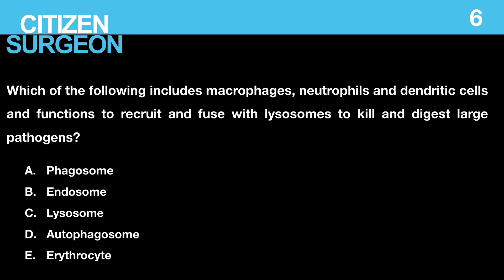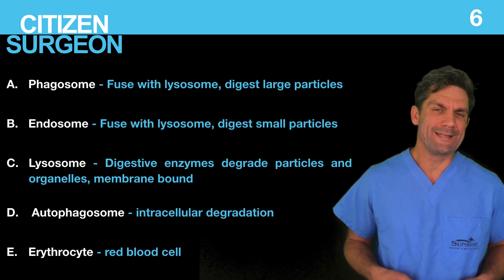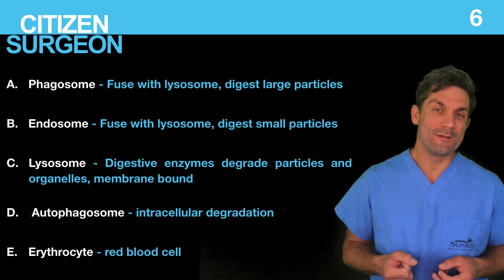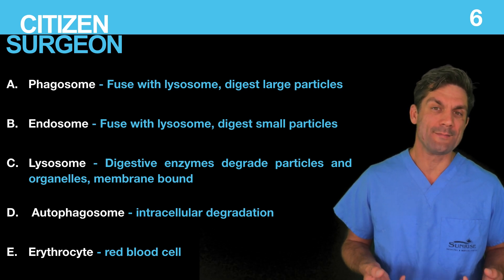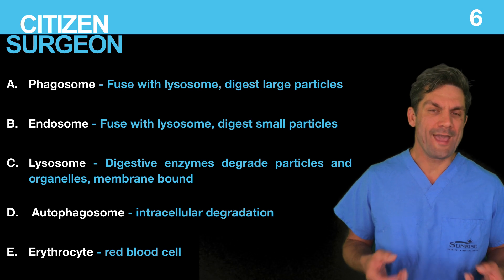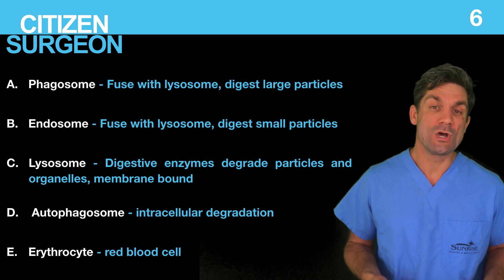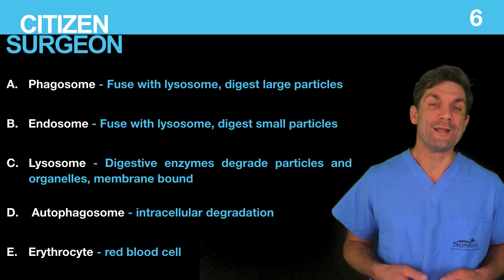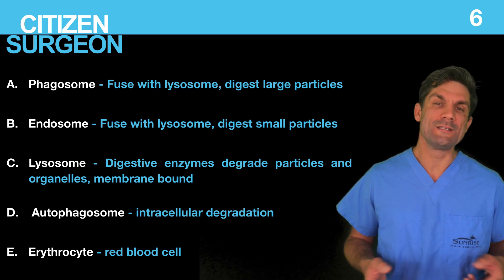Question six: which of the following includes macrophages, neutrophils, and dendritic cells and functions to recruit and fuse with lysosomes to kill and digest large pathogens — the phagosome, endosome, lysosome, autophagosome, or erythrocyte? The correct answer is A, the phagosome. Macrophages engulf large particles, fuse with lysosomes containing digestive enzymes, and destroy bacteria or foreign bodies. Endosomes do this for small particles. The lysosome is the vesicle containing the digestive enzymes. The autophagosome is used for intracellular degradation. The erythrocyte carries oxygen and is not a dendritic cell.